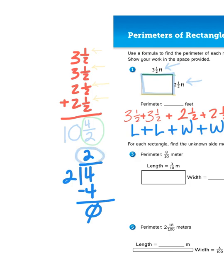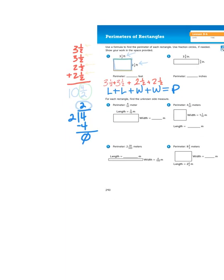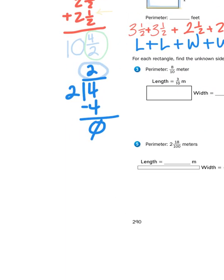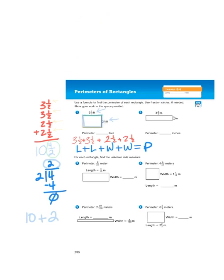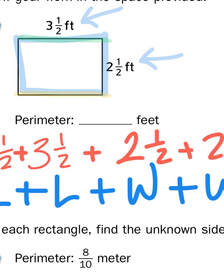So, ten and four halves, another way of me thinking about that, ten and four halves, is ten plus two. And what's ten plus two, everybody? That's right, twelve. So my perimeter for problem number one would be twelve feet.